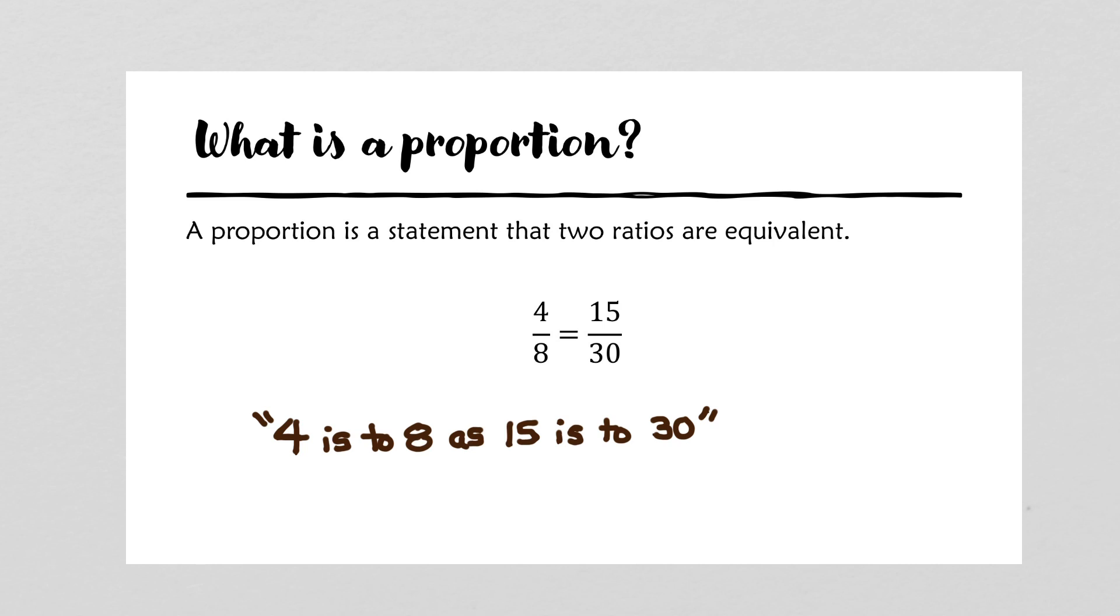First, if we look at the relationship between 4 and 8, we know that that's actually equal to the relationship between 1 and 2. In other words, 4 eighths is just 1 half. And if we also compare 15 over 30, we see that 15 relates to 30 in the same way. 15 is half of 30, or in other words, 15 over 30 also reduces to 1 half. Here is a statement where two ratios are equivalent.